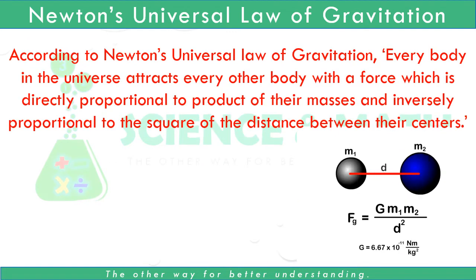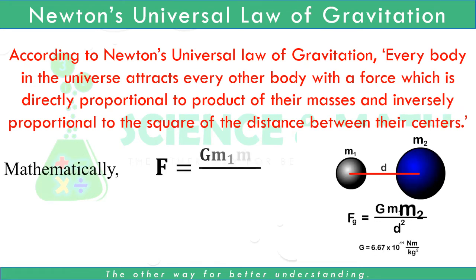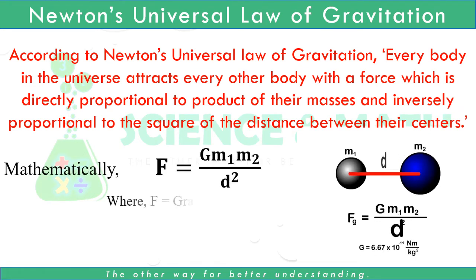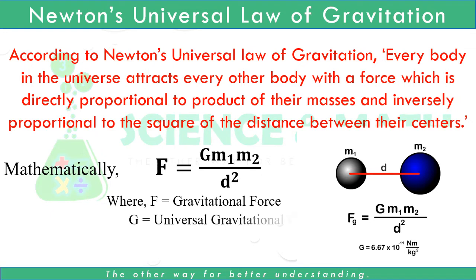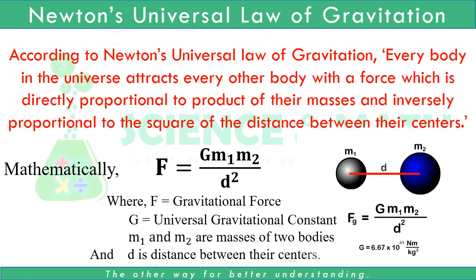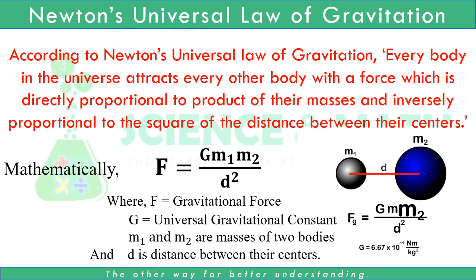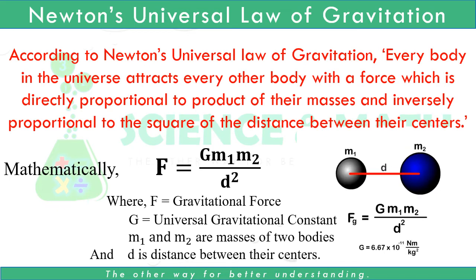Mathematically, Newton's Universal Law of Gravitation can be expressed as F = G·M₁·M₂ / D², where F equals gravitational force, G equals Universal Gravitational Constant, M₁ and M₂ are the masses of the two bodies, and D is the distance between their centers.